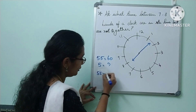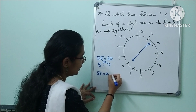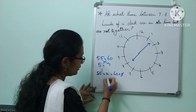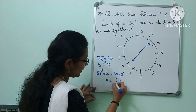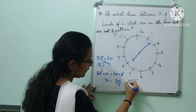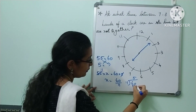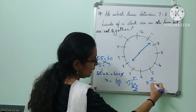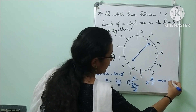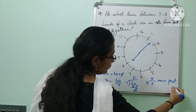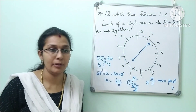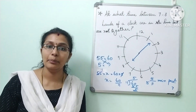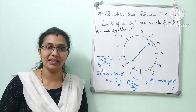If you cross multiply: 55 into x is equal to 60 into 5. So 5 is equal to 55, x is equal to 60 by 11. Divide by 11: 55 remaining 5. So 5 by 11 minutes past 7 — the hour hand and minute hand are in exact opposite direction.